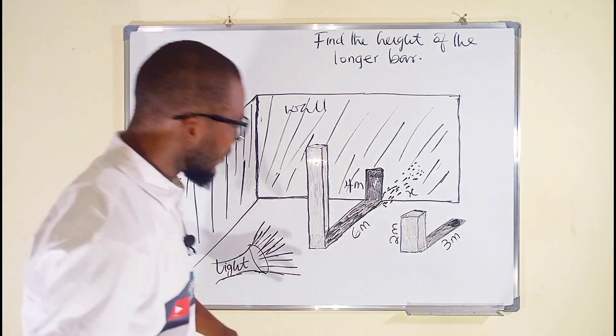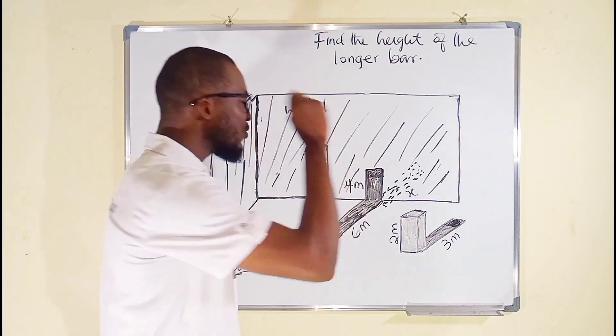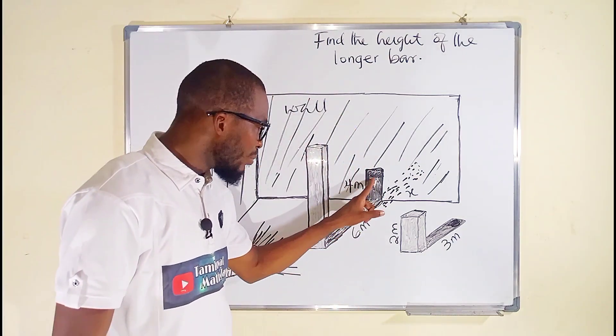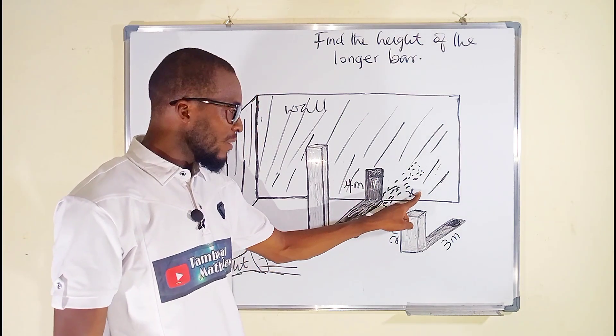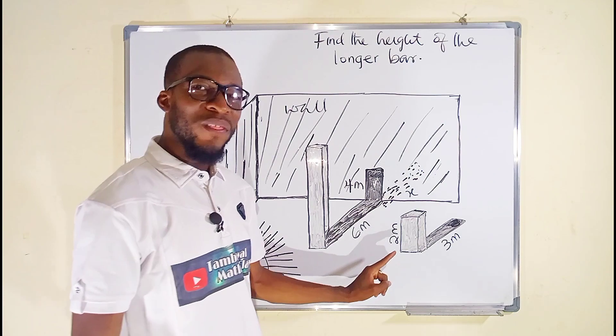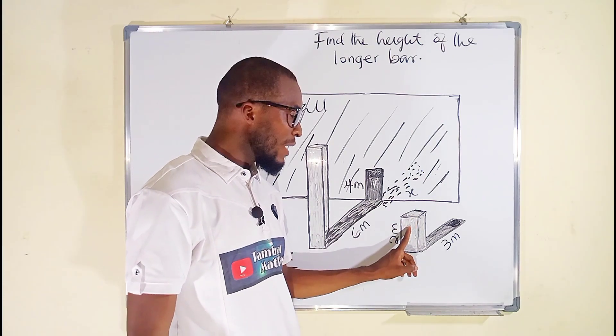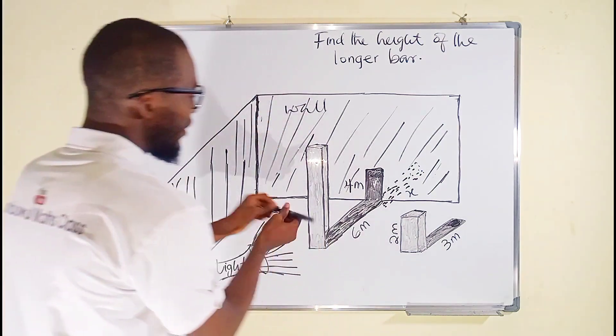So let us start relating. Let's forget about the longer bar for now. Suppose this four meter shadow is a bar. The ratio of the height of this bar to the length of its shadow, which is x, must be equal to the ratio of the height of this shorter bar to the length of its shadow as well. So let us relate them.